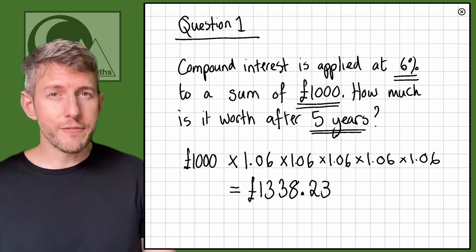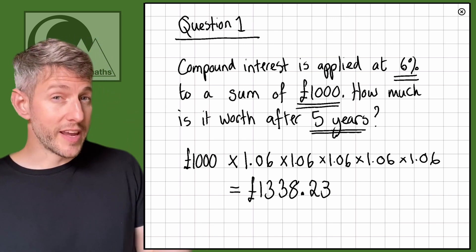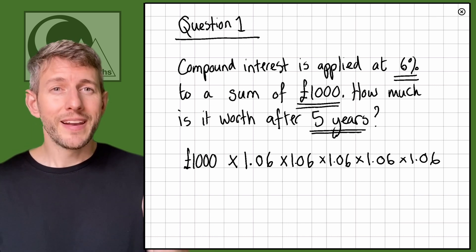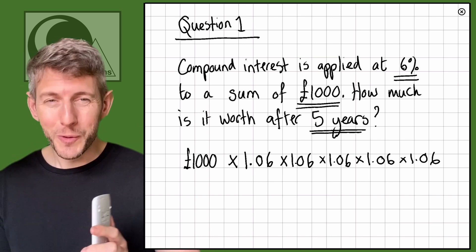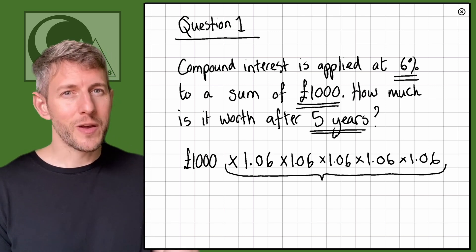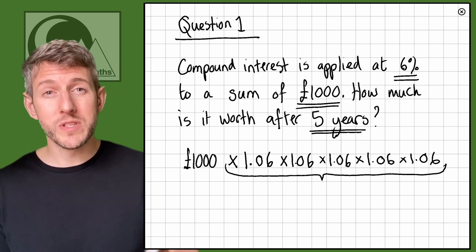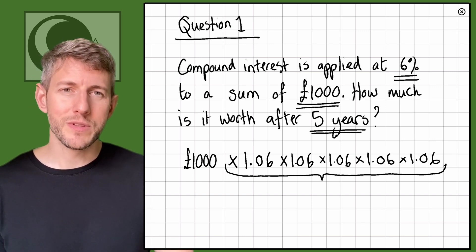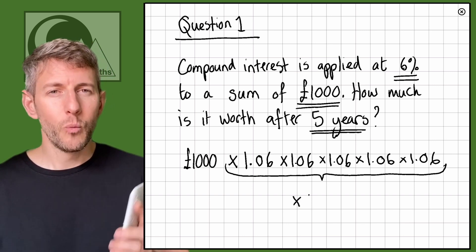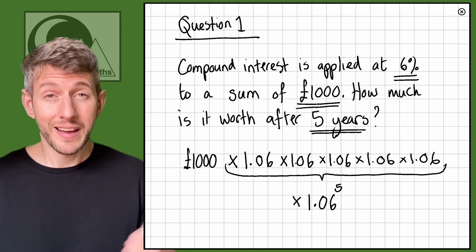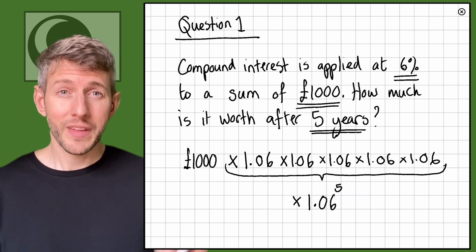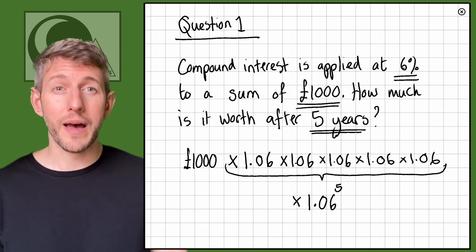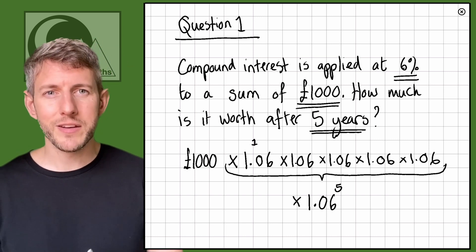I could have done this a different way. As we can see, I did 1,000 times 1.06 five times. From the last tutorial on indices — which tell us how many times we're multiplying something by itself — I could have done 1,000 multiplied by 1.06 to the power of five, and that gives the same answer. You might think that's quicker, or you might not have a calculator that allows you to do that, but it's a nice shortcut.